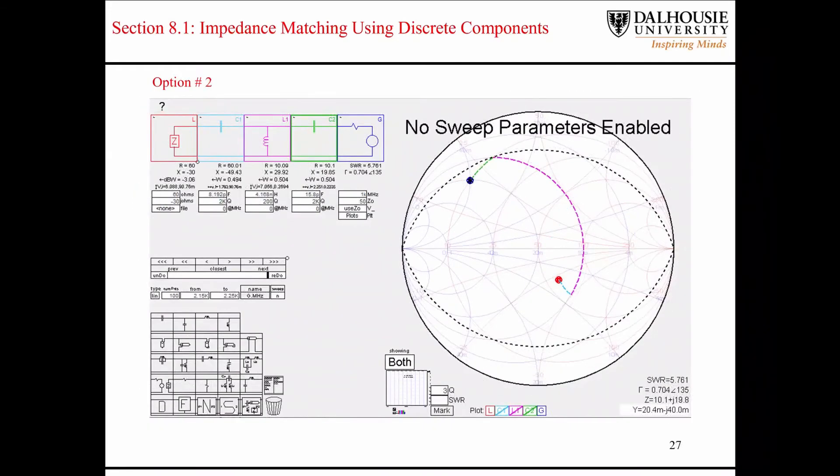Here's another possible route. Again, we were able to accomplish this by using first a series capacitor, and then a shunt inductor, and then another series capacitor here. So that would be option 2. You can see that I'm numbering the different options. There's four different options, so we've seen the first two so far.